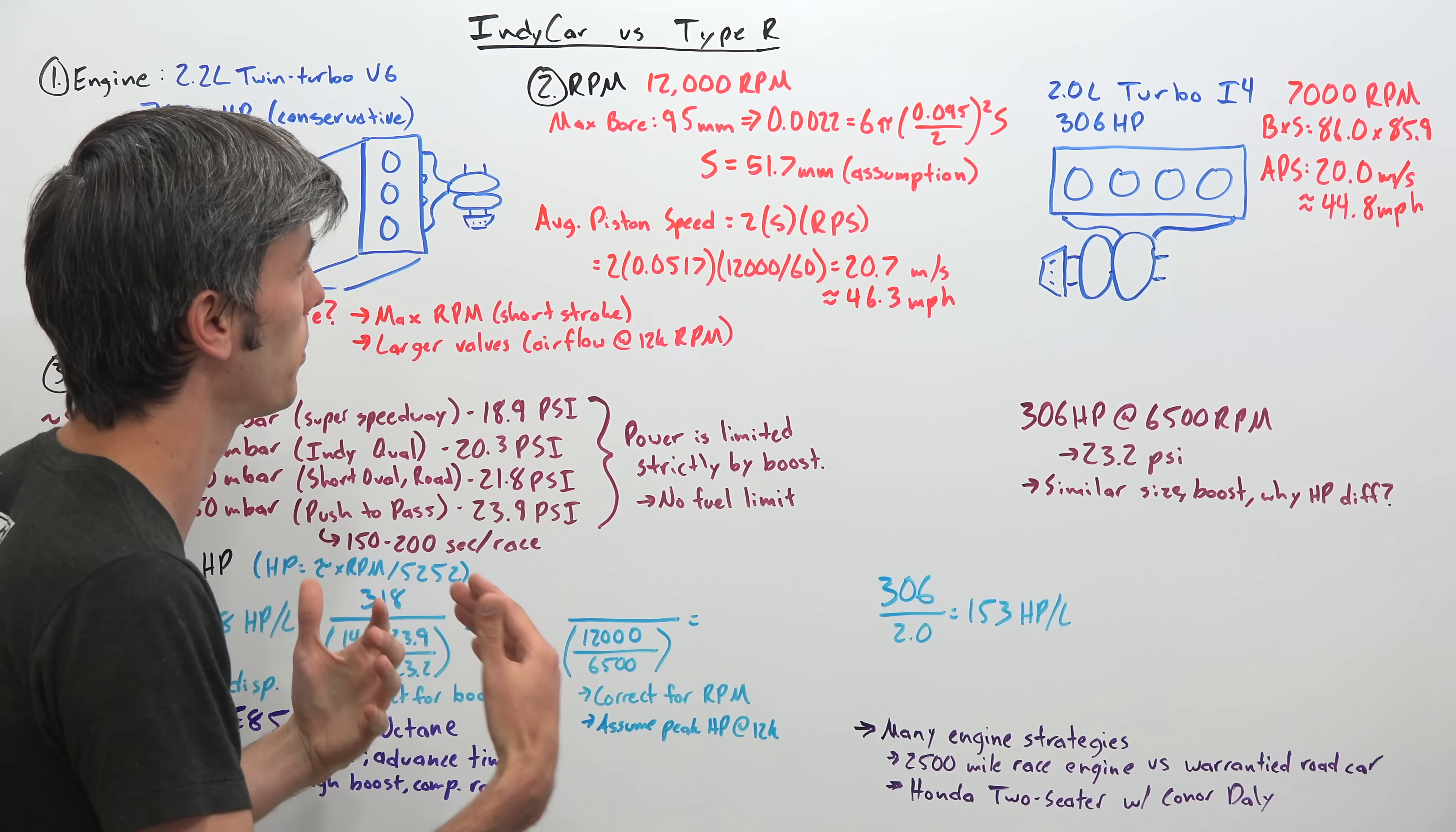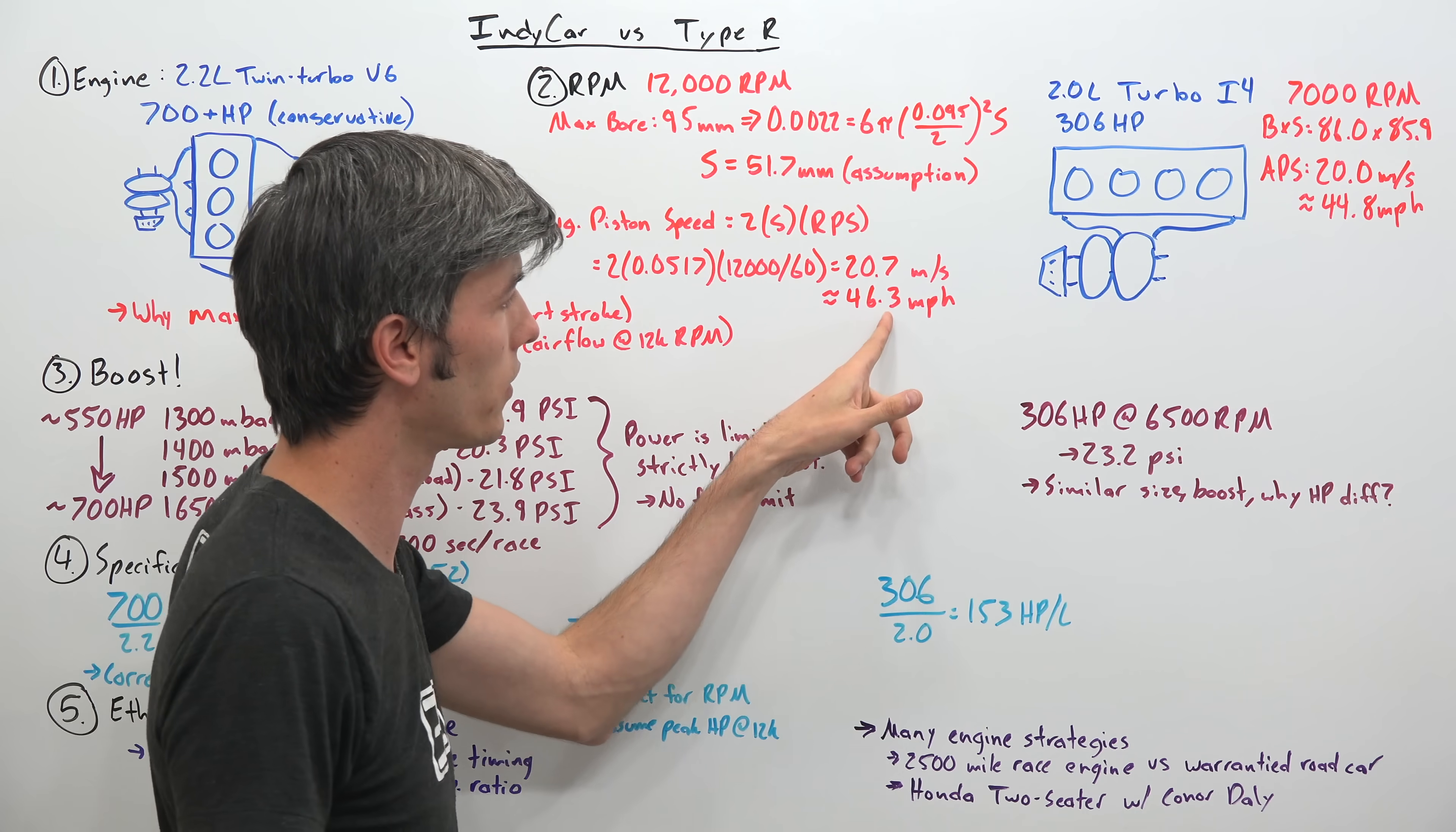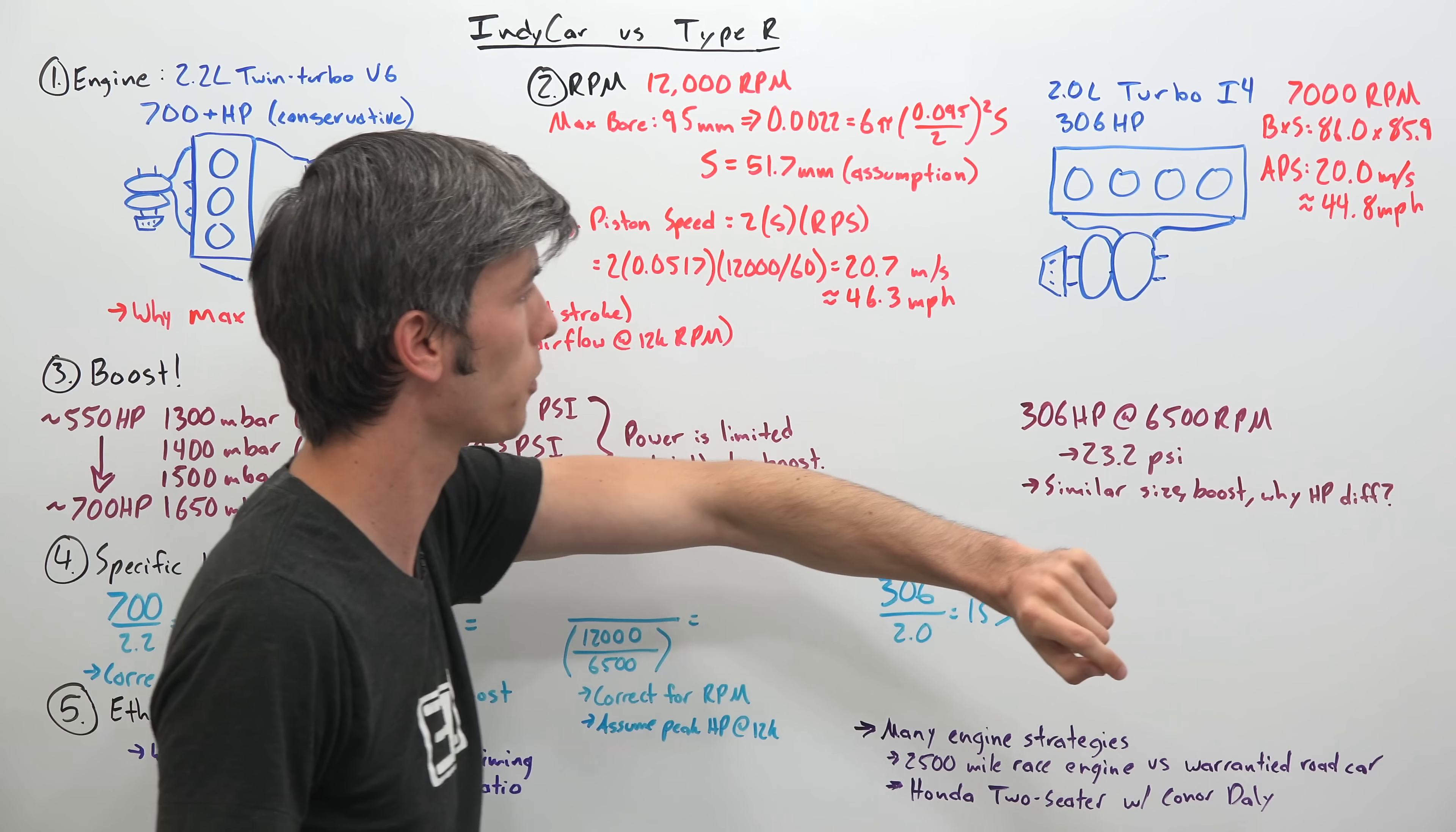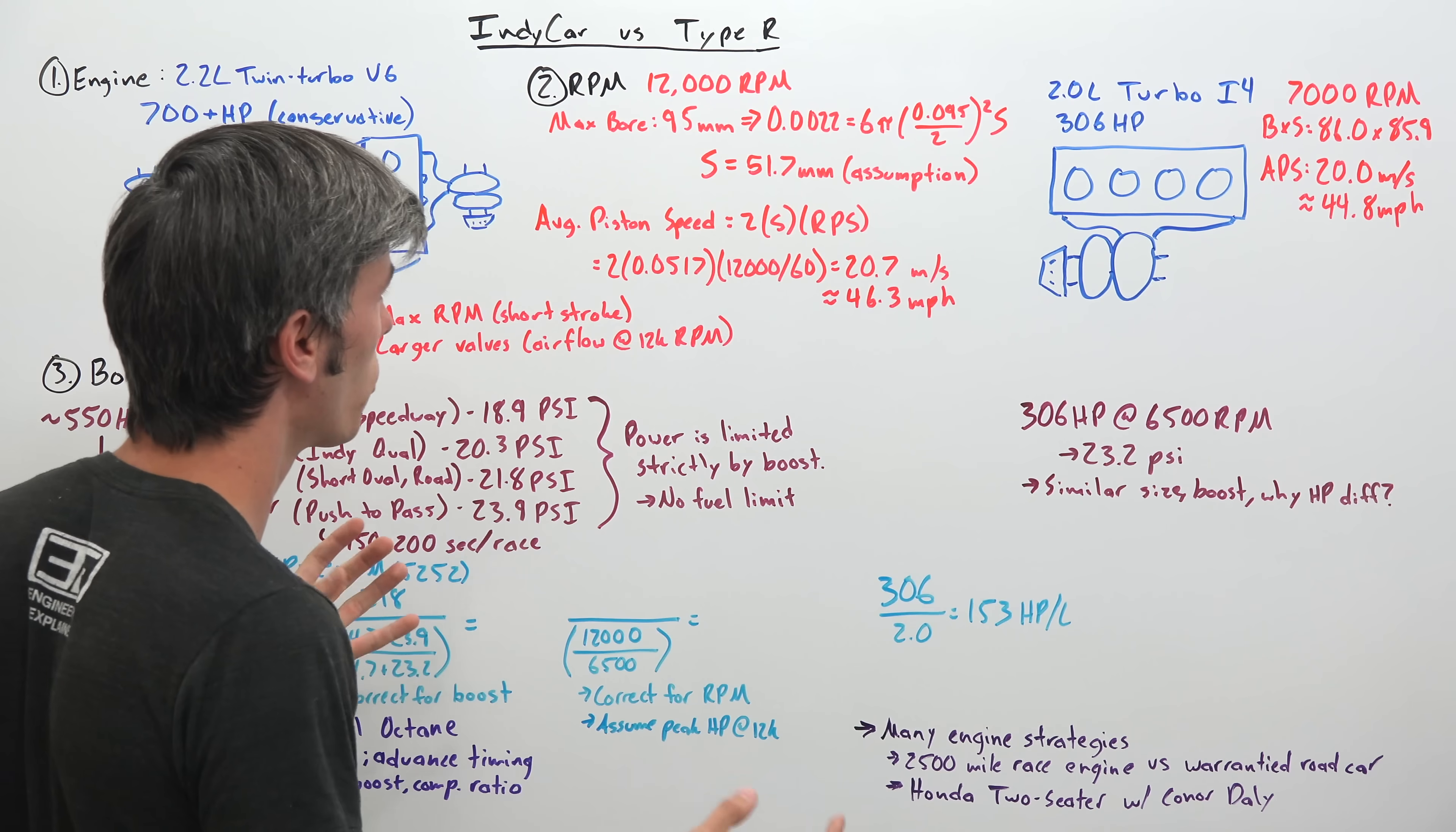Well that brings down your piston speeds and allows you to reach these really high rpm. And so if we do the math for the average piston speed with this 2.2 liter engine, we get 20.7 meters per second, assuming that stroke of 51.7, which assumes the 95 millimeter bore, or about 46.3 miles per hour. If we do that same math with the Type R which has a much more square engine, 86 millimeter bore by 85.9 millimeter stroke, we get an average piston speed of 20.0 meters per second. So very close to the 20.7 meters per second of this IndyCar. So there are limitations as far as how fast combustion can occur and how fast pistons can move. And so you see that while these have very different levels of rpm between them, the piston speeds are actually quite similar.